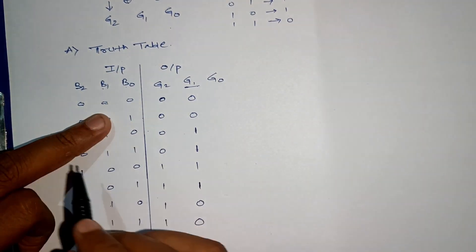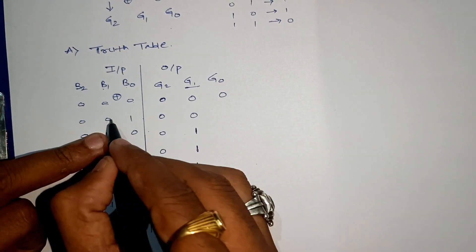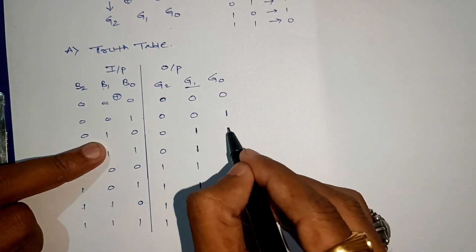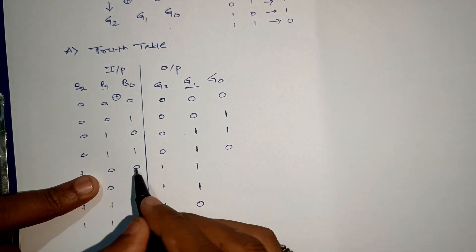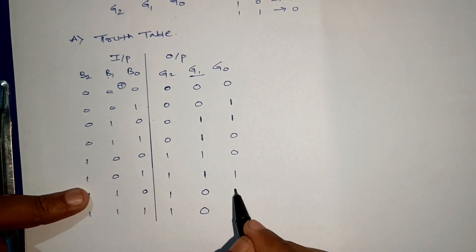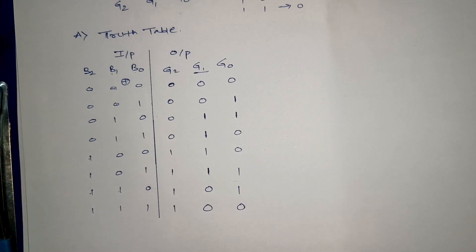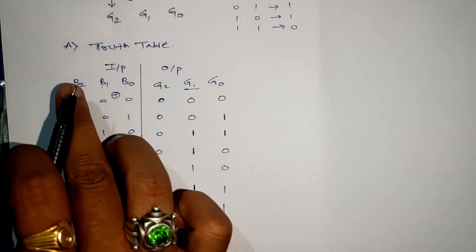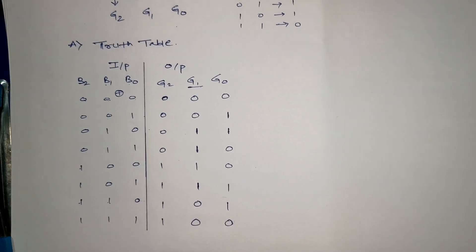Now let's come across G0. G0 will be XORing of B1 with B0. So let's XOR them: 0 XOR 0 is 0, 0 XOR 1 is 1, 1 XOR 0 is 1, and 1 XOR 1 is 0. So we got a truth table for conversion of 3-bit binary to gray code.